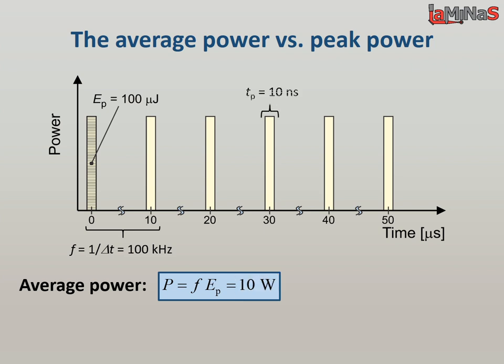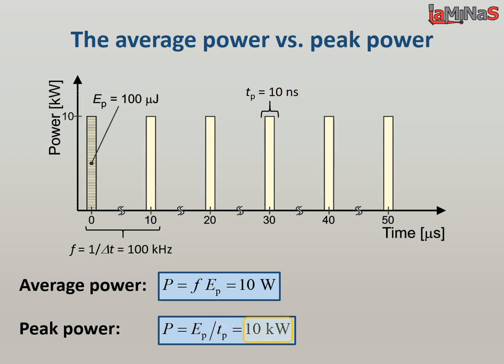But if the pulses are 10 nanoseconds wide, the peak power, which is the power during each pulse, equals 100 microjoules divided by 10 nanoseconds, which is 10 kilowatts. We see that the average power and the peak power may reach significantly different values.